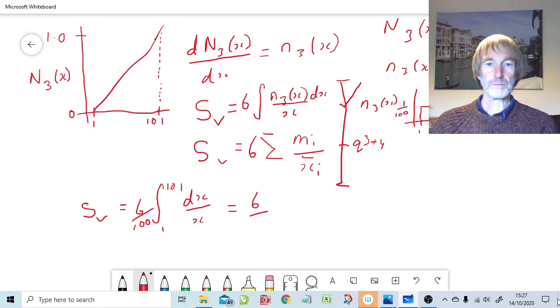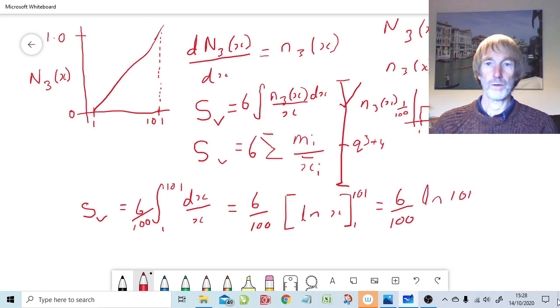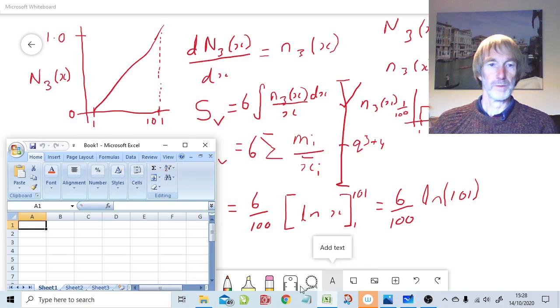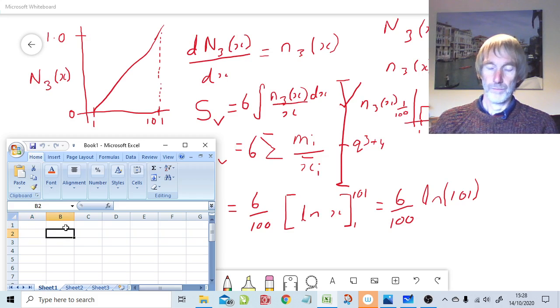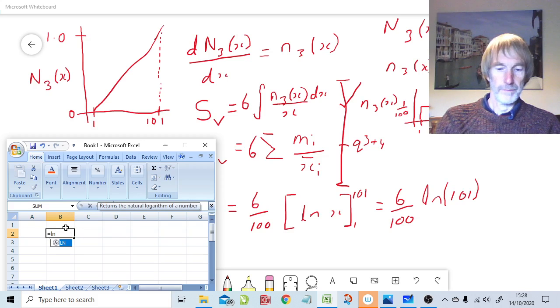So we have six over a hundred and it's the natural log ln x equals six over a hundred times by the natural log of one oh one. So I need to work out the natural log of one oh one. So we want plug it directly in ln 101.